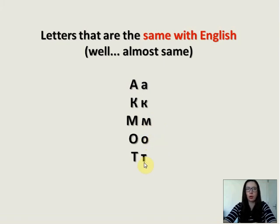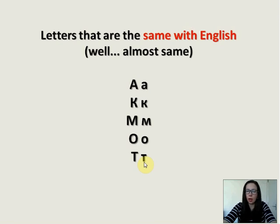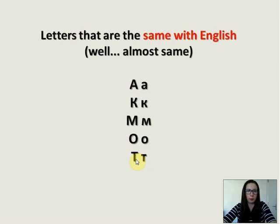One more thing: Russian letters have their names, just like English — A, B, C, D, E, F, G. In Russian we also have names: А, К, М, О, Т. But knowing the names will not help you in learning Russian, so I will just mention the sounds, not the names of the letters: А, К, М, О, Т. And we will start letter by letter.